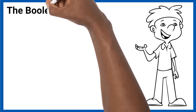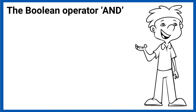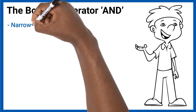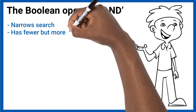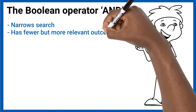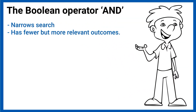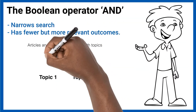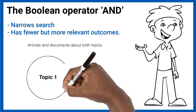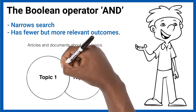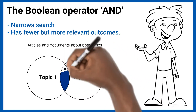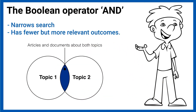The Boolean operator AND enables users to narrow their searches by providing them with fewer but more relevant outcomes and links separate concepts together. By using this operator, the search engine recognizes that it should only recover documents that incorporate both of the keywords.